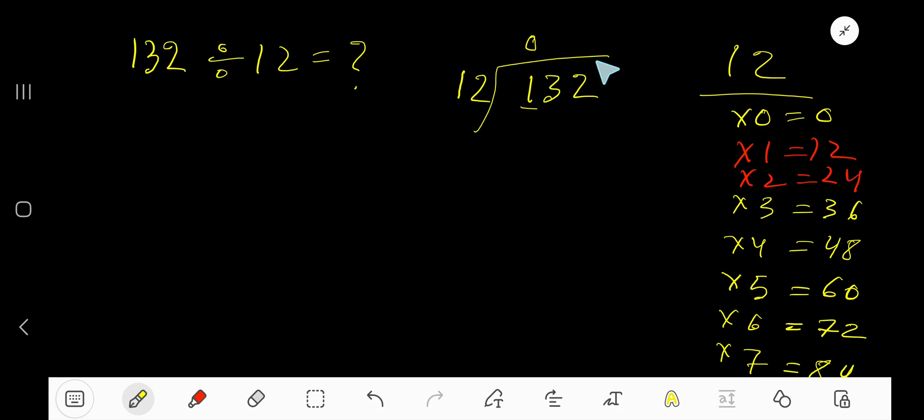So 0 times 12 gives you 0. Subtract 1, bring down the next digit, 13. 12 goes into 13 how many times? 2 times is 24 which is greater, so one time. 1 times 12 is 12. Subtract 1, bring down the next digit.